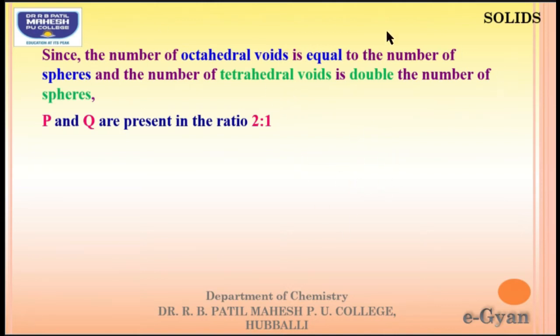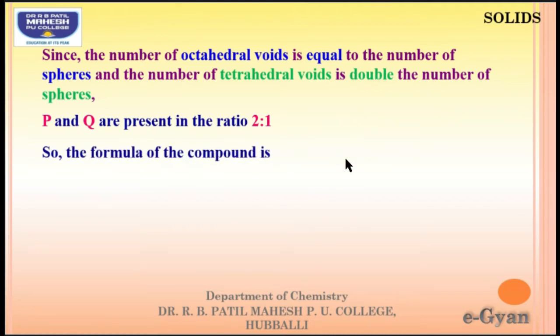Since P and Q are present in the ratio of 2:1, the formula will be P₂Q₁, that is P₂Q.